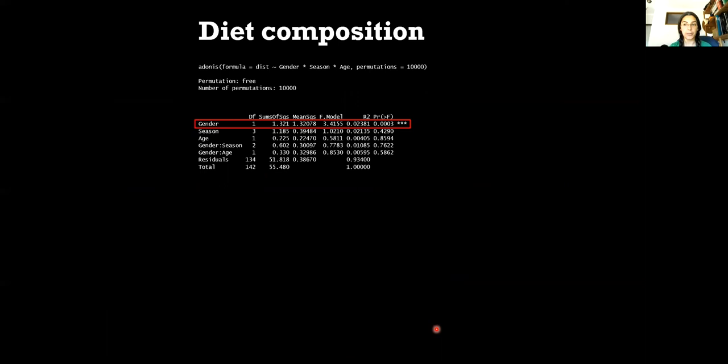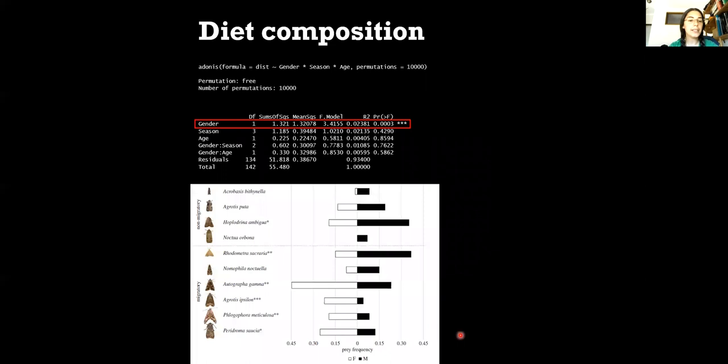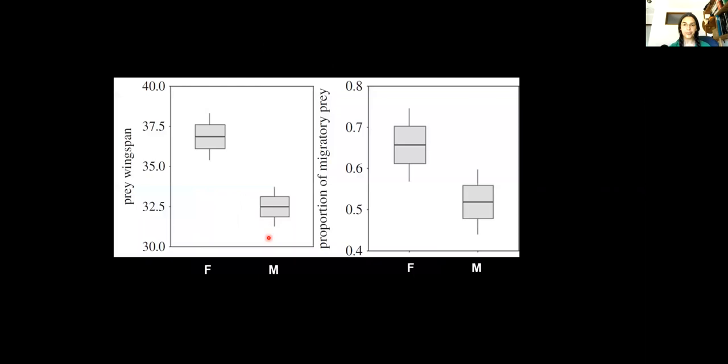We were interested in understanding which prey items were causing these differences between males and females. Here you can see the frequency of occurrence of each of these prey items in females and males. These prey over here occur more frequently in females while these ones occur more in males. By looking at these species you can start seeing a pattern which is these species are large migratory moths while these ones seem to be smaller and non-migratory species. We tested this further and found that average prey size of females is larger than of males and also the proportion of migratory moths seem to be higher in females than in males.